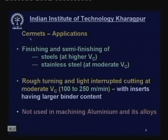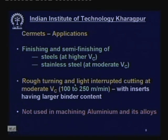Applications of cermets include finishing and semi-finishing of steels at higher velocity around 200 to 250 m/min, and stainless steel at moderate velocity. For rough turning and light interrupted cutting at 100 to 250 m/min, the grade needs to be tougher — meaning higher binder (nickel-cobalt) content for toughness. One important note: cermets should not be used in machining aluminium and its alloys because of poor interaction.